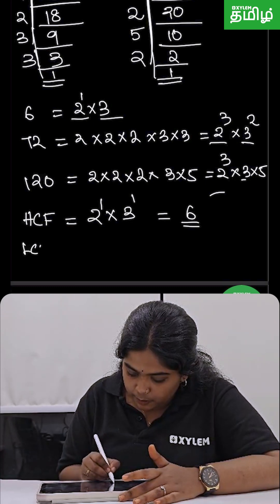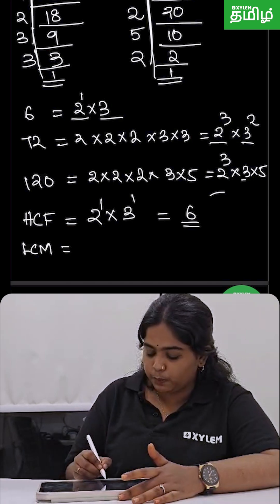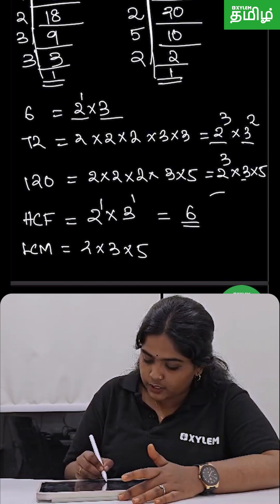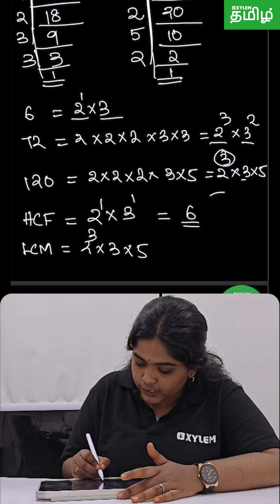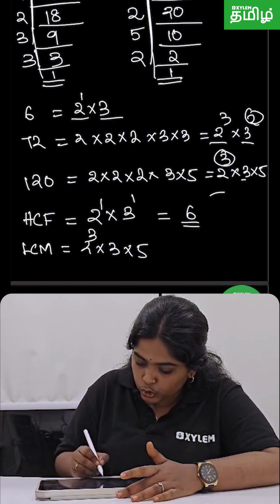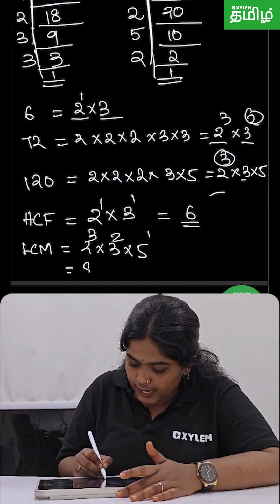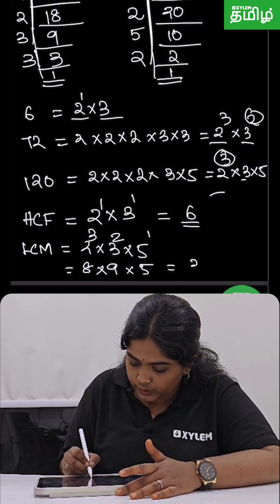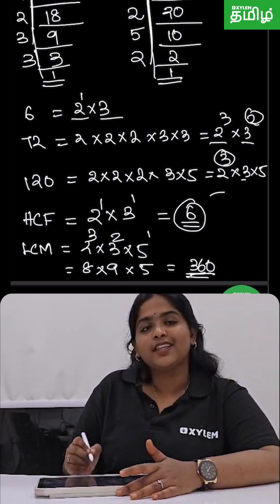Okay. So next one is the LCM. LCM uses all the factors with highest power. So 2, 3, and 5. What is the highest power of 2? That is 3. And highest power of 3, that is 2. And highest power of 5 is 1. So that is 8 into 9 into 5, that is equal to 360. So HCF is 6 and LCM is 360.